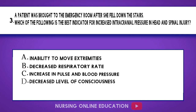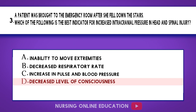Question 3. A patient was brought to the emergency room after she fell down the stairs. Which of the following is the best indicator for increased intracranial pressure in head and spinal injury? A. Inability to move extremities. B. Decreased respiratory rate. C. Increase in pulse and blood pressure. D. Decreased level of consciousness. The answer is option D: Decreased level of consciousness.